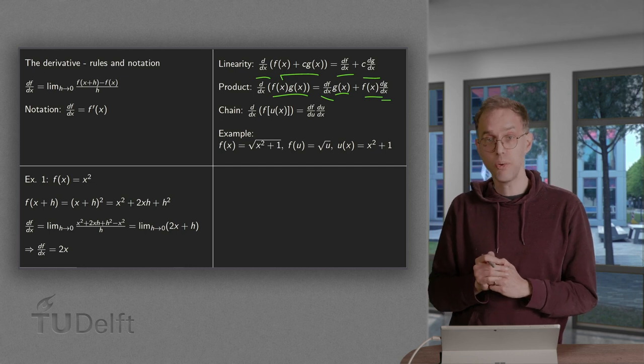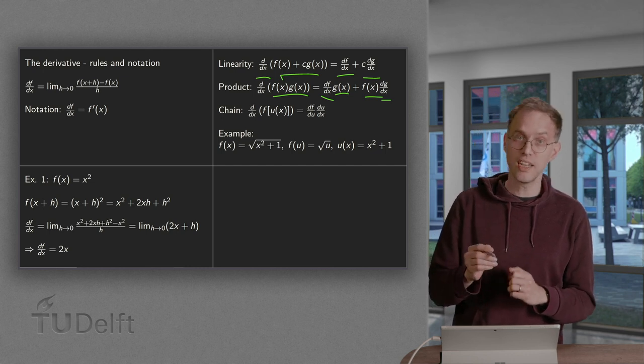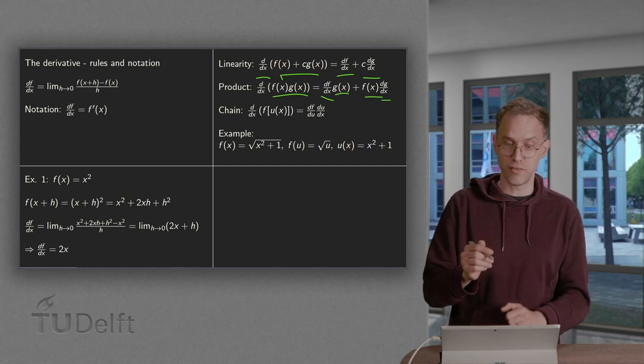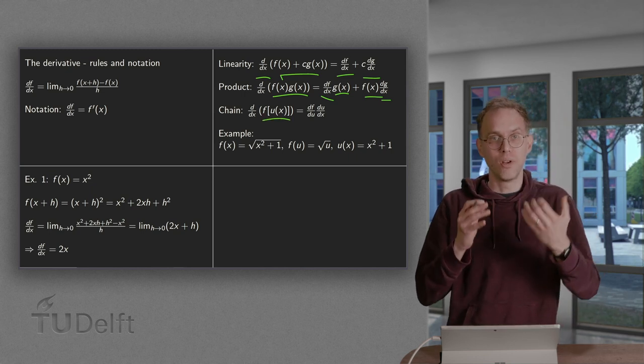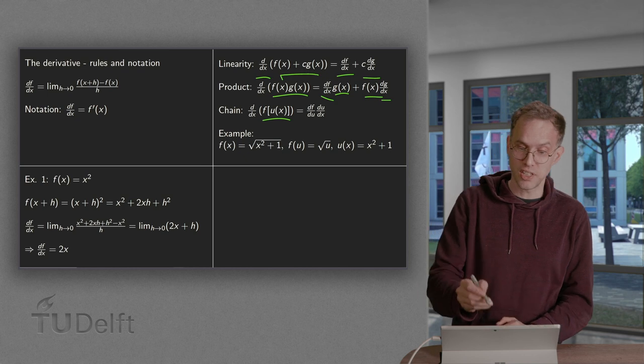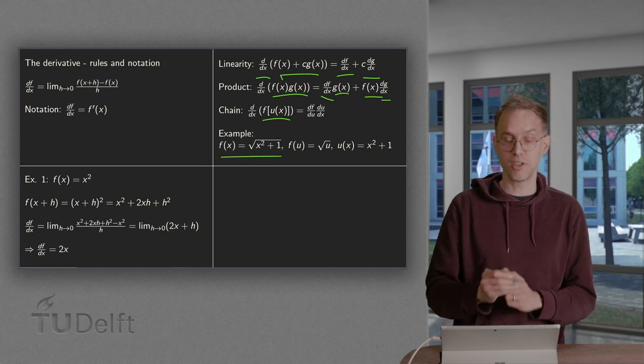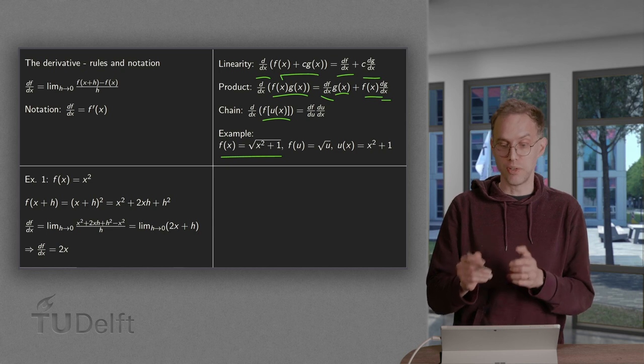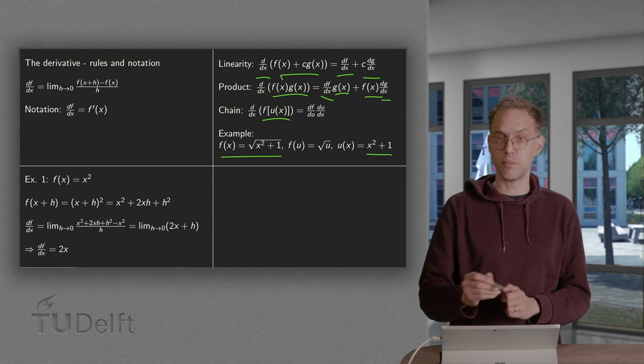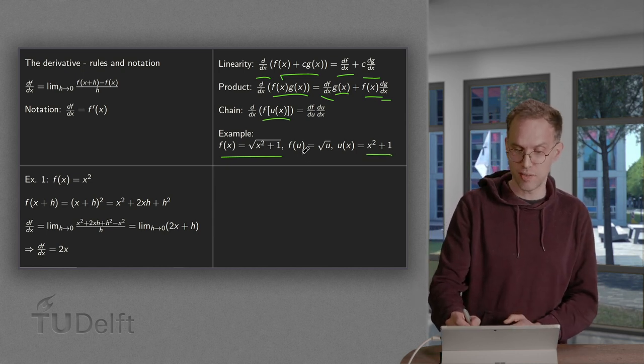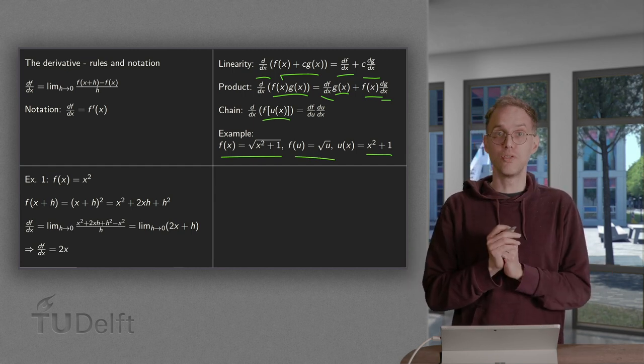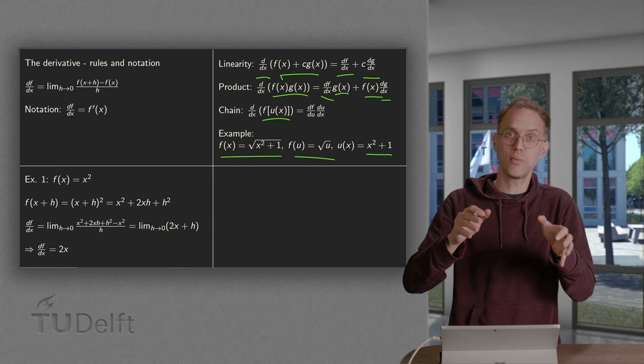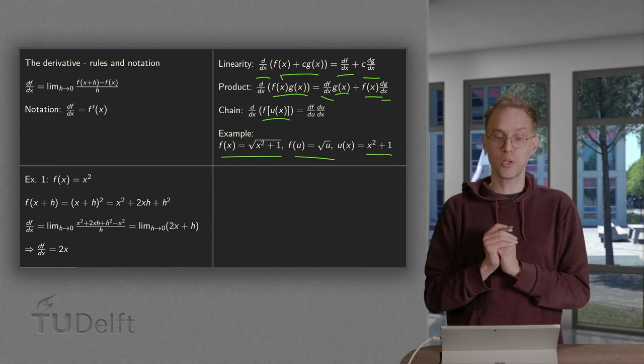And then we have the chain rule which is slightly more tricky which we can use for the composition of functions. If you have f(u(x)), so an example of such a composition is f(x) equals √(x²+1). So in that case we have a composition of u = x²+1 and then we take the square root of u. So now we have a composition of two functions. First you do x²+1 and then you take the square root of what you have.